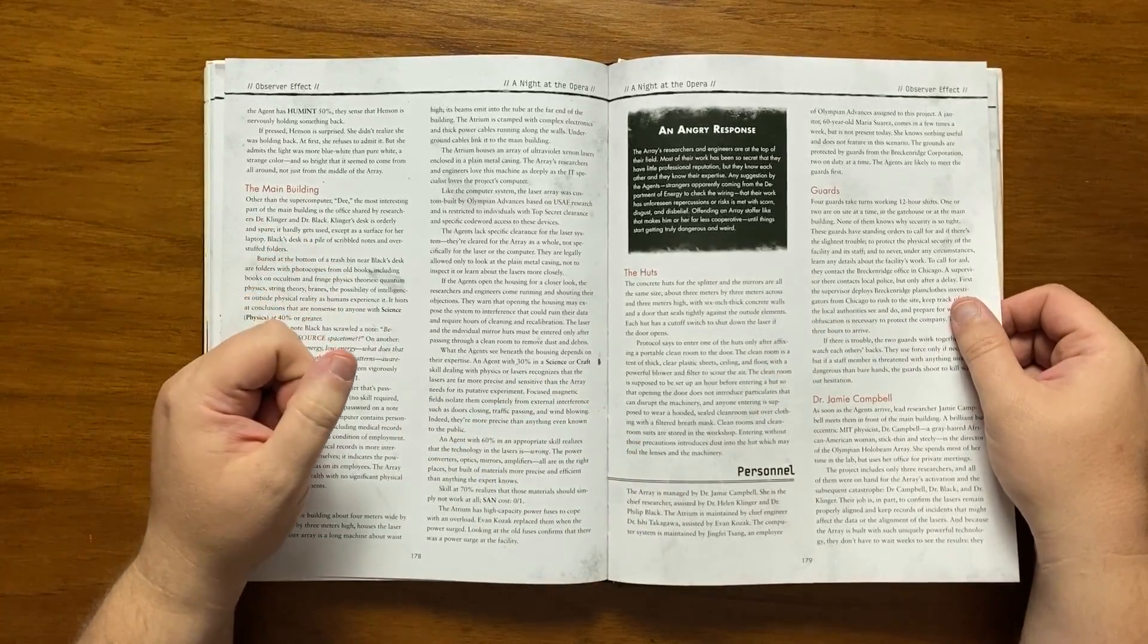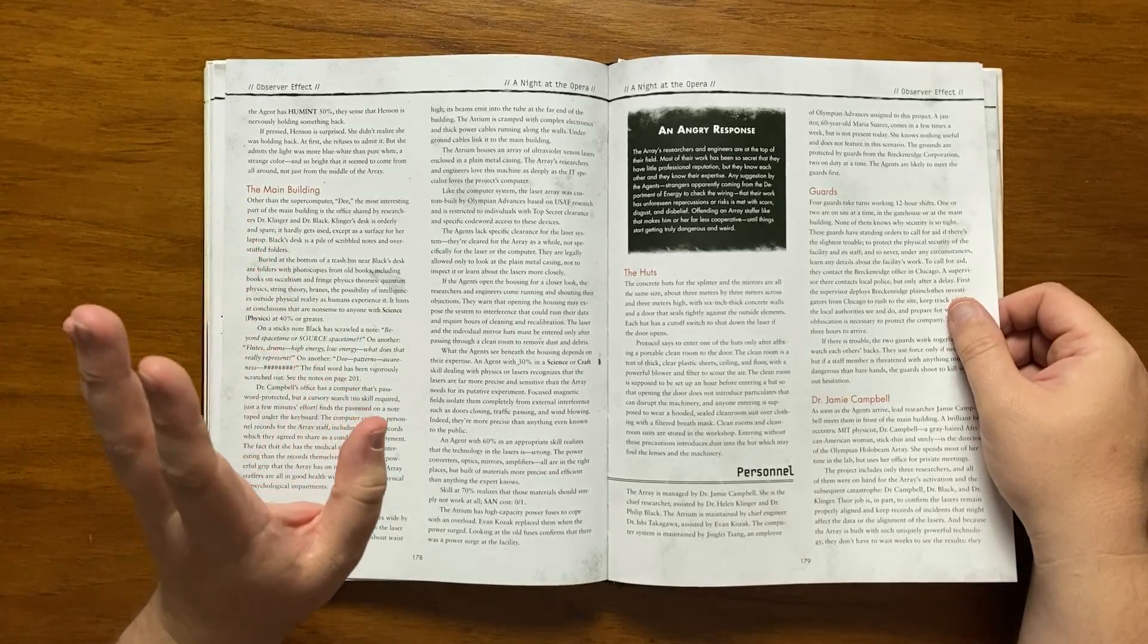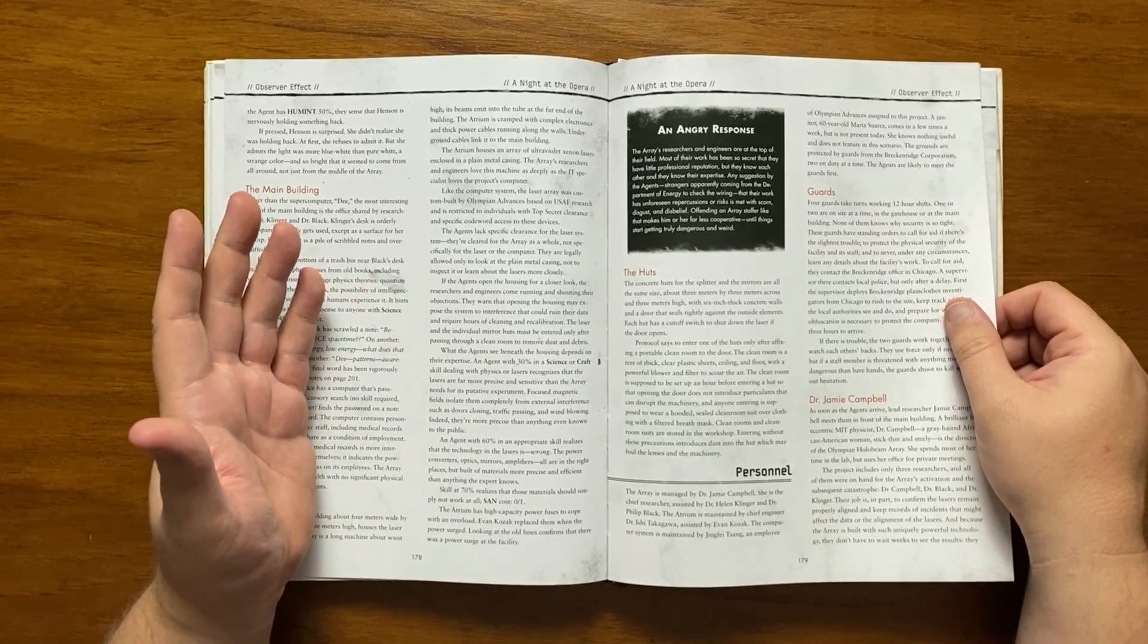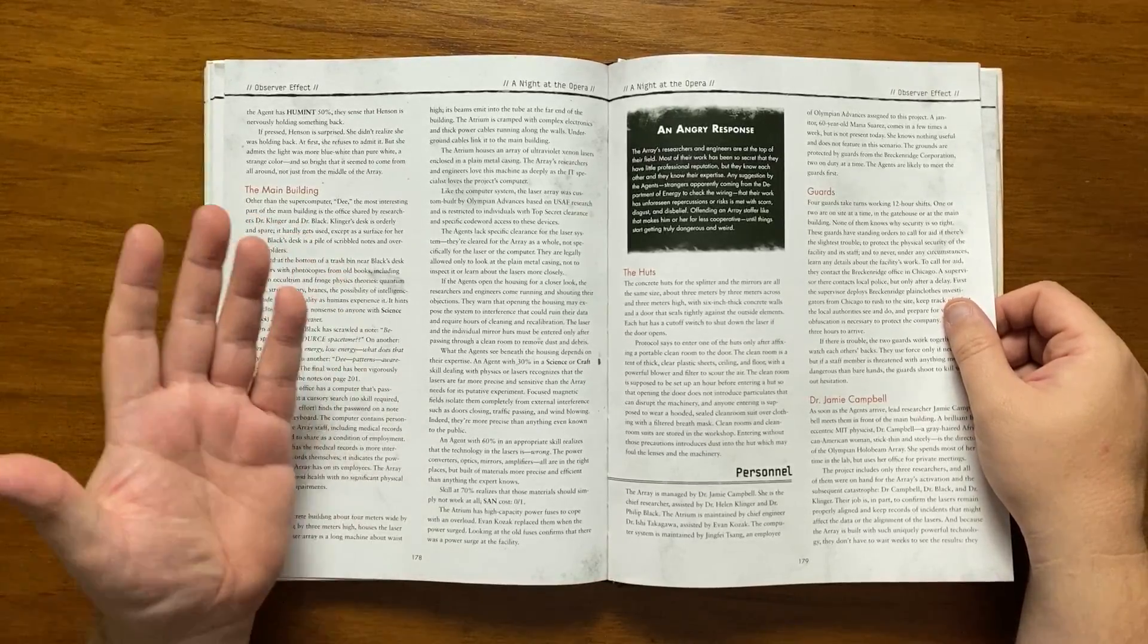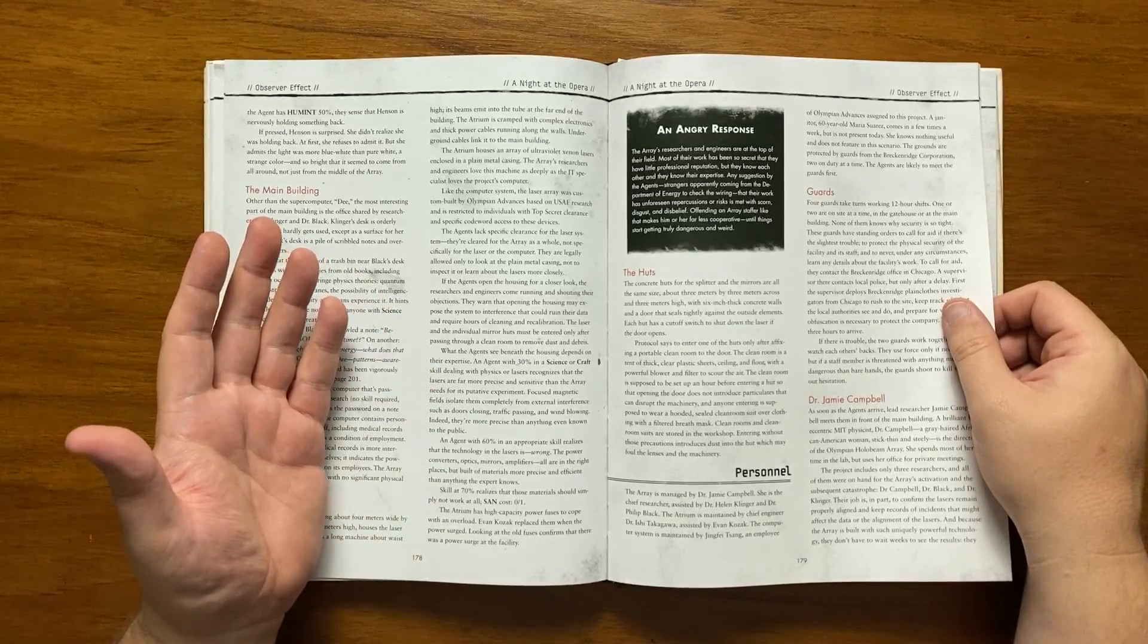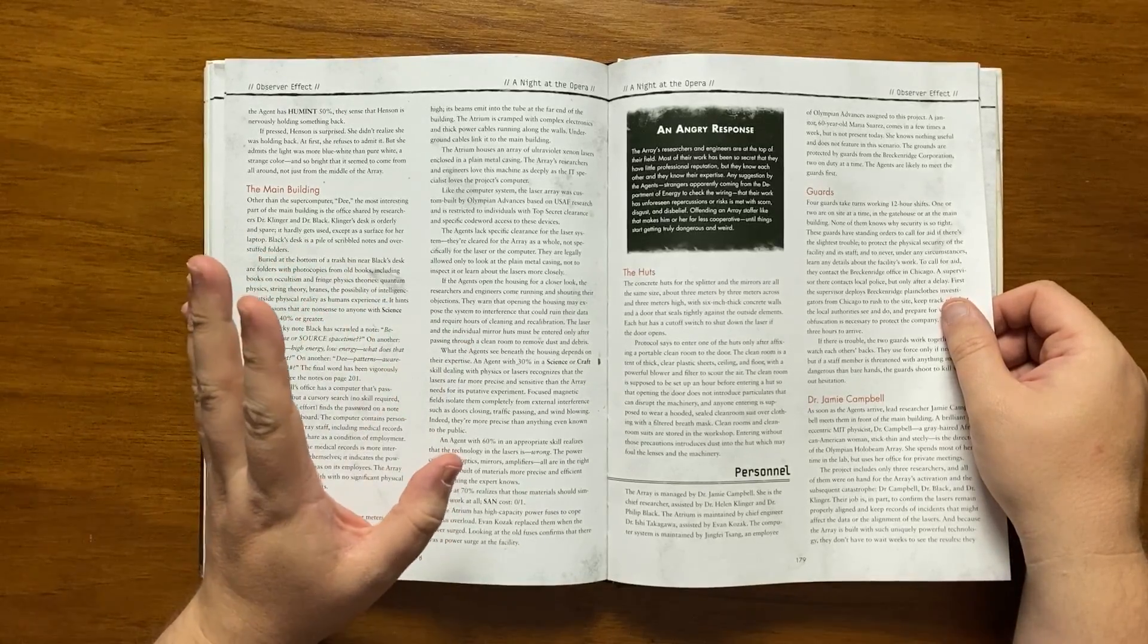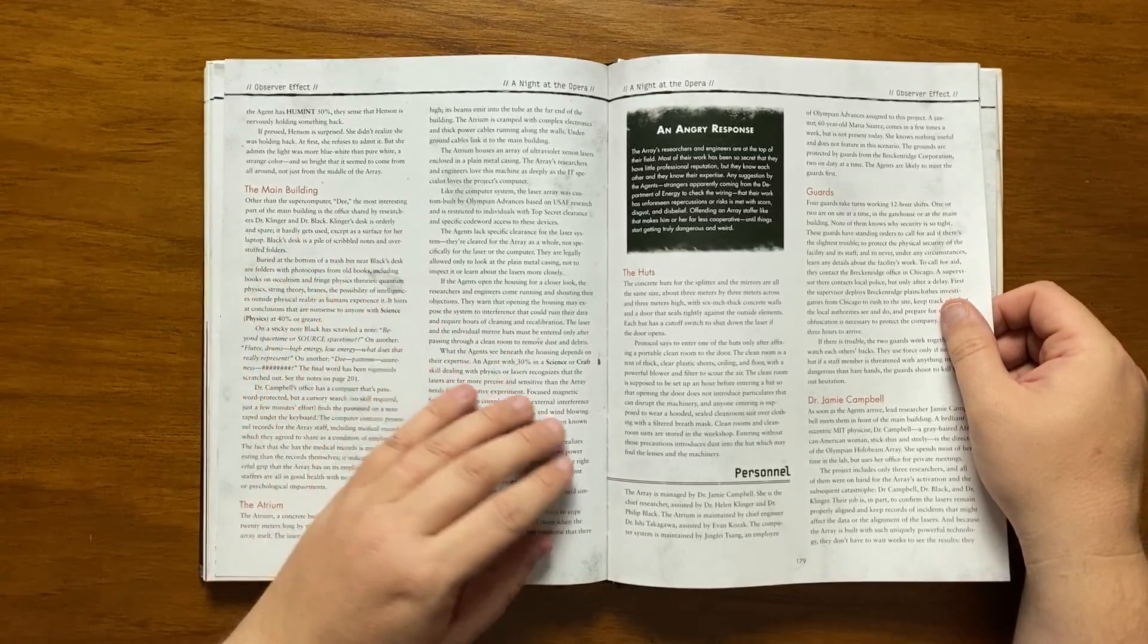Klinger's desk is tidy as she is hardly there. Black's desk is a pile of scribbled notes and folders. If a room is searched agents will find photocopies from old books on occultism and fringe physics which talk about intelligences outside of physical reality that seem to draw nonsense conclusions. On a sticky note Black has scrawled beyond space time or source space time and on another flutes drums high energy low energy what does that really represent and another reads D patterns awareness with the final word being scribbled out. His computer, if searched, finds personnel records for the Array staff which shows they are all in good health with no physical or psychological issues.